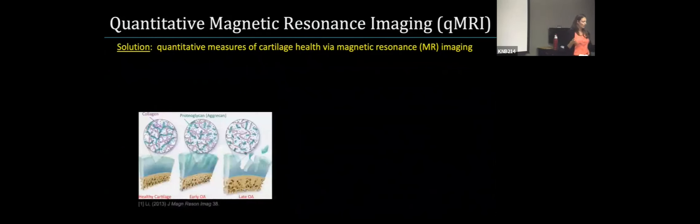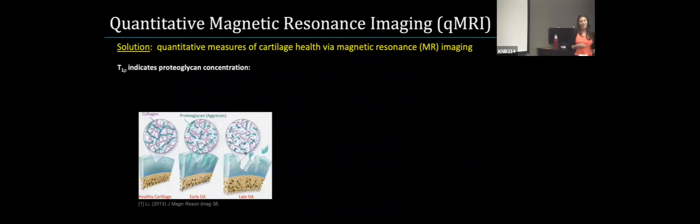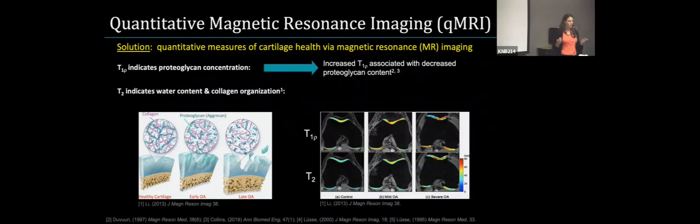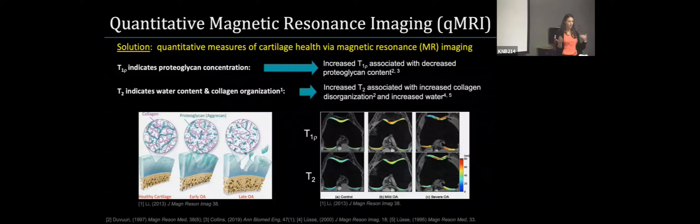Emerging techniques have come out in terms of quantitative magnetic resonance imaging or QMRI. Cartilage is primarily comprised of collagen, proteoglycan, and water content. Using MR imaging, we can run a T1-weighted sequence, which gives us an indicator of how much proteoglycan is in the cartilage. Higher T1-Rho indicates decreased proteoglycan content. On images of the knee, when we see red, we're looking at higher values of T1-Rho or T2, meaning more degeneration of the cartilage. T2 is an indicator of water content and collagen organization — increased T2 means more degeneration and increased collagen disorganization.